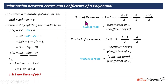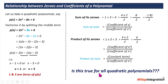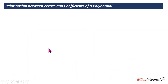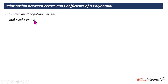So we have a very good relation between zeros and the coefficients. But the question is: is this true for all quadratic polynomials? Let's take one more example to verify. Another polynomial is 3x squared plus 5x minus 2. It uses the same factorization method, so we need to split the middle term.